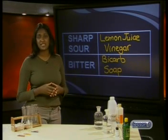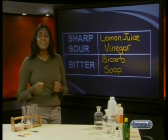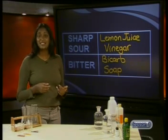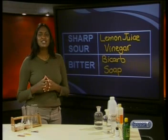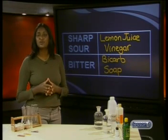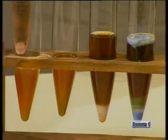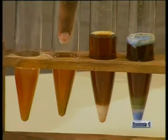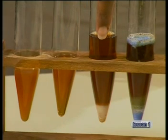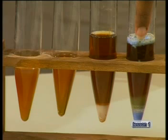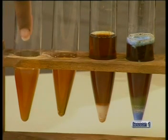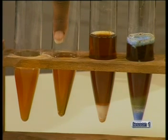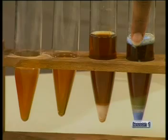Notice that water was not sour or bitter. The sharp-tasting substances are acids, and the bitter substances are bases. Water is a neutral substance. We can also use the feel of substances to decide if they are acids or bases — bases have a very soapy or slimy feel, but acids don't. The lemon juice and the vinegar turns the tea yellow, while the bicarbonate of soda and the washing powder turns the tea darker brown.